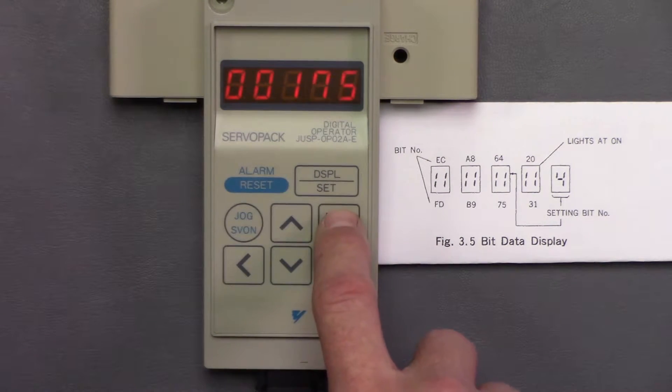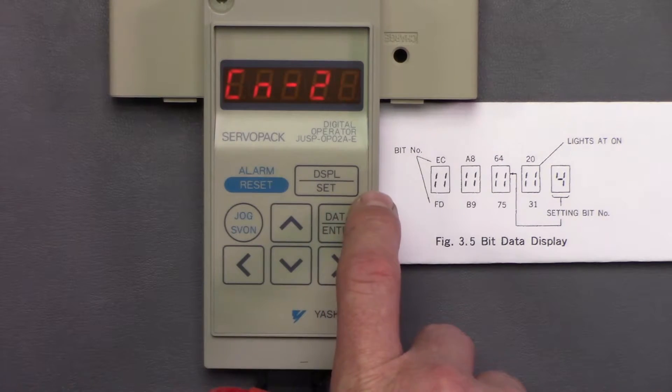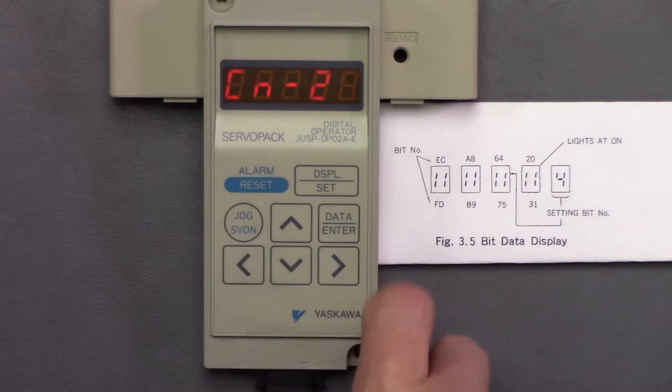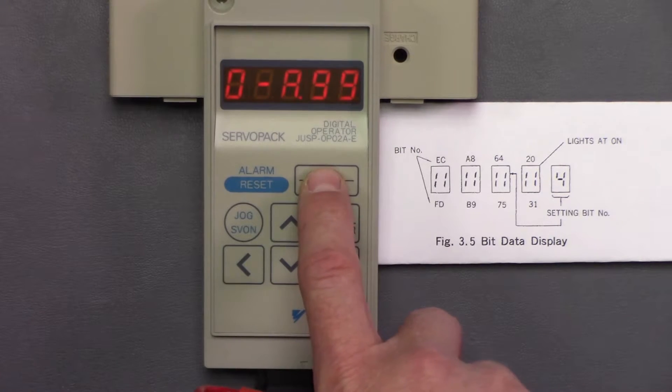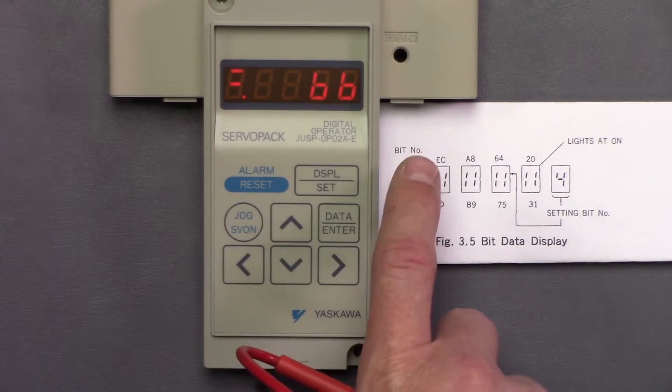It'll accept 175, and now we're back into CN. Remember, if I want to get out of CN, I hit the display set, and now we're back to the status screen.